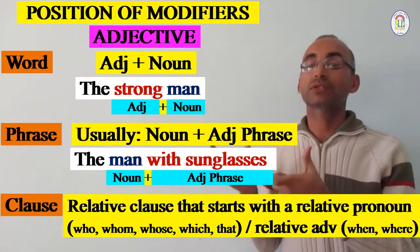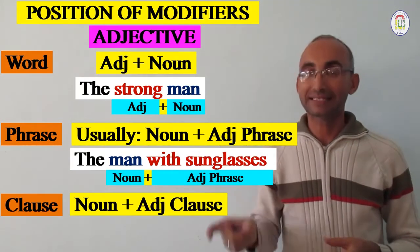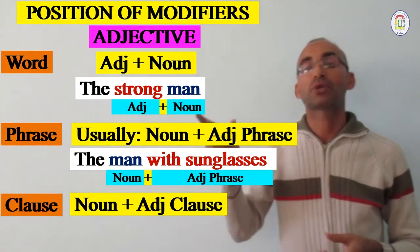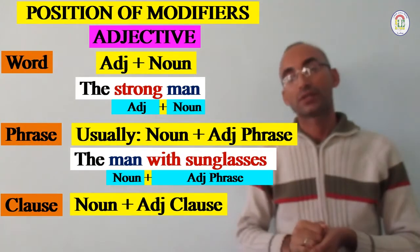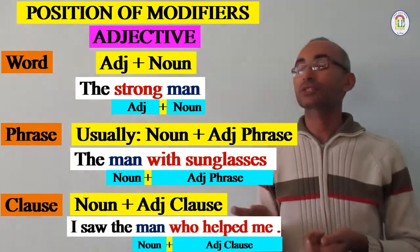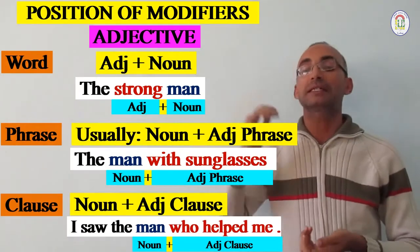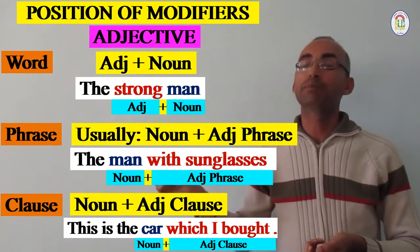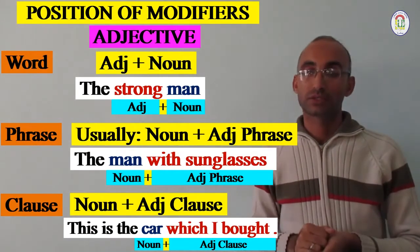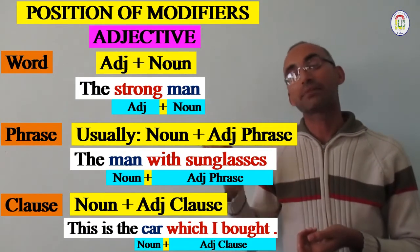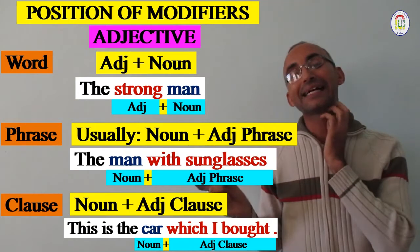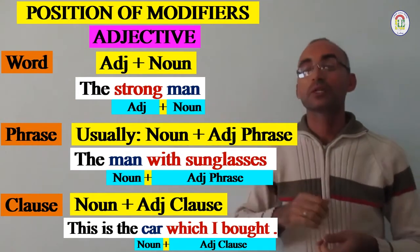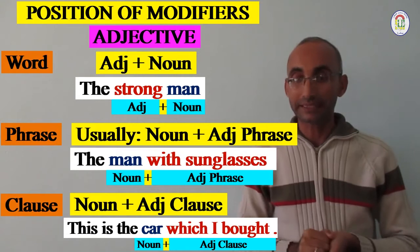The adjective clause must always be placed directly after the noun it modifies. For example: 'I saw the man who helped me.' 'This is the car which I bought.' So 'who helped me' and 'which I bought' act as adjective clauses and modify the nouns directly before them.